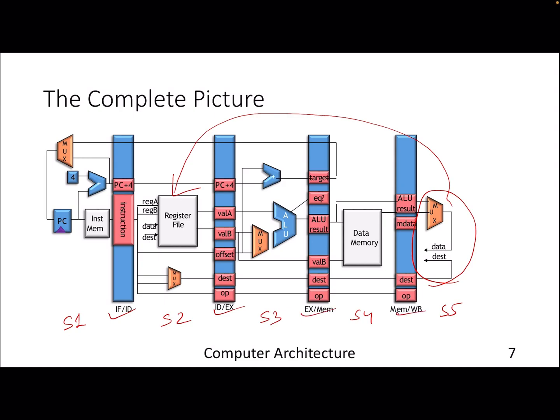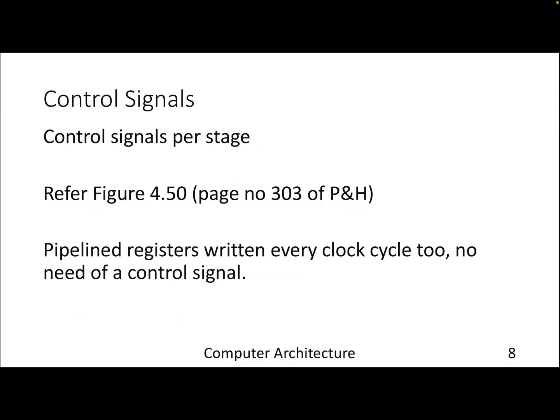This is the complete picture: stage one through stage five. The write-back is shown separately here for clarity, but it actually happens in the register file. Regarding control signals: in a single-cycle CPU, control signals were triggered every cycle for the entire data path. With pipeline design, control signals are per stage, and the inter-stage pipeline registers hold control signals for that instruction for the remaining stages.